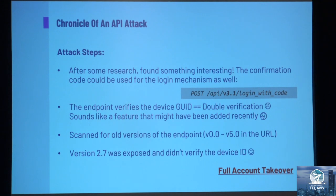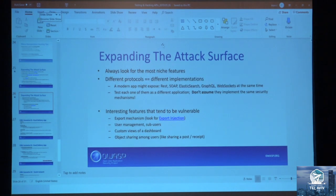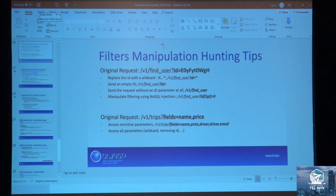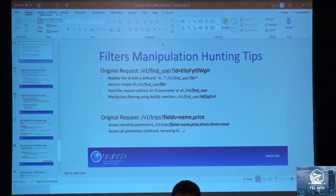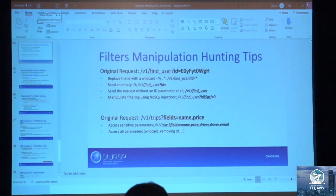This is a good example of how API vulnerabilities require you to understand the logic of the API. It's not easy to find good API vulnerabilities, but if you use the attack vectors for APIs and understand the logic, you can find very interesting things. Any questions or thoughts? Thank you.